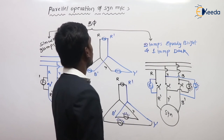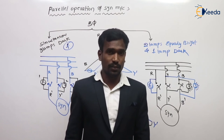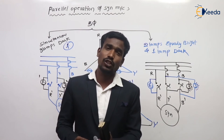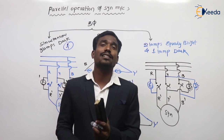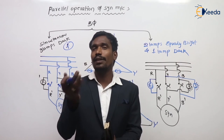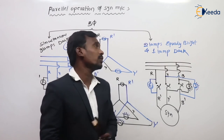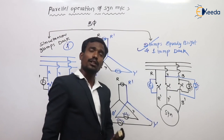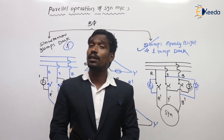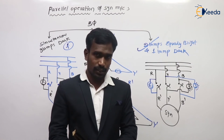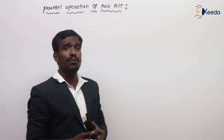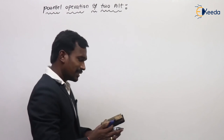This is the parallel operation conditions, advantages, conditions, and synchronization methods — synchronoscope method and lamp method for single phase and three phase. Nowadays we use the bright lamp method with the synchronoscope. Between these two, the bright lamp method is more preferable because of easy judgment. Now let's see parallel operation of two alternators.